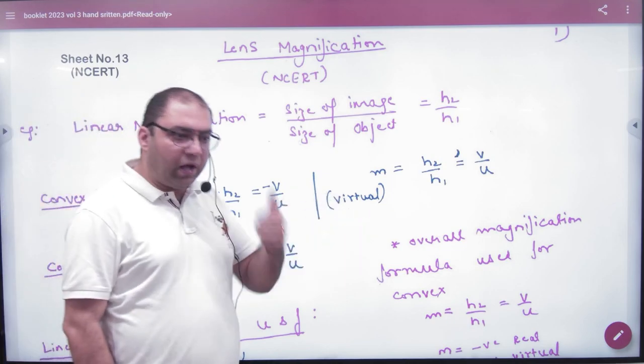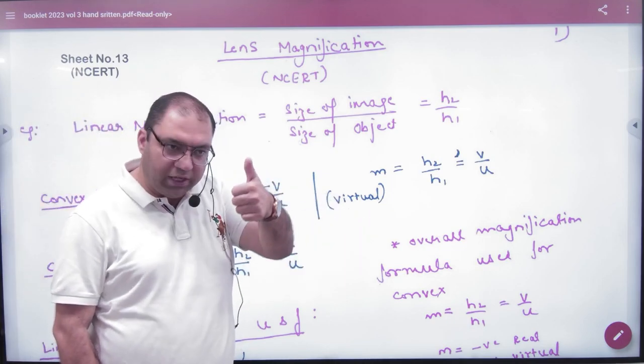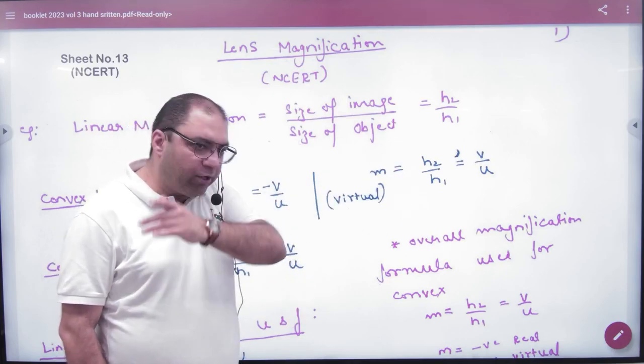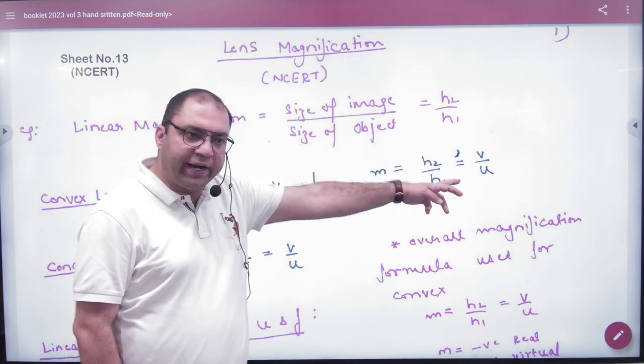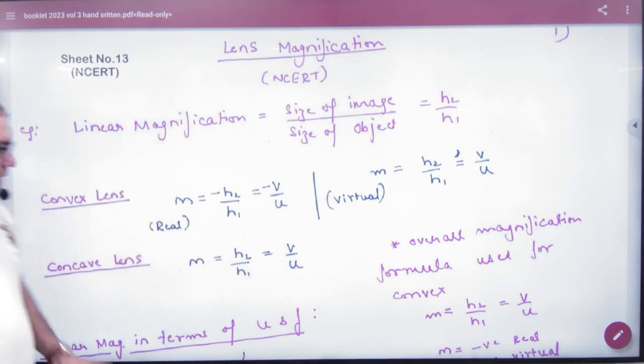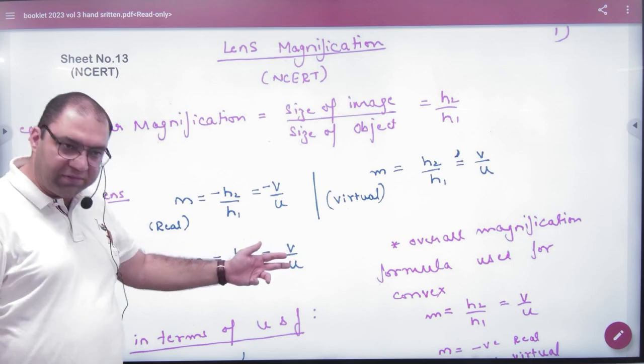And in virtual, both height of image and object are straight. So H2 is positive, H1 is positive. And image and object are on the same side, so V is negative, U is negative. So this is in magnification. And in this case there is also a virtual case. In virtual, both are straight, V and U are on the same side.